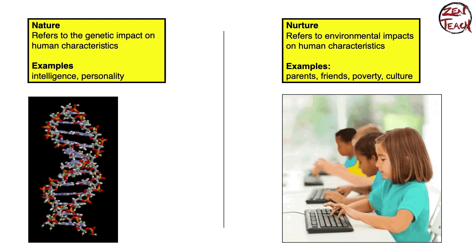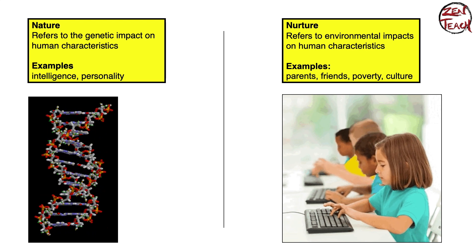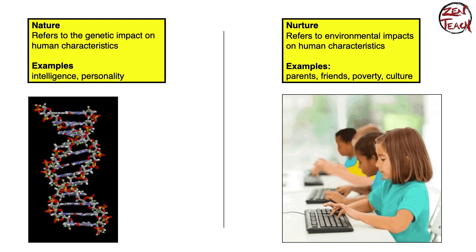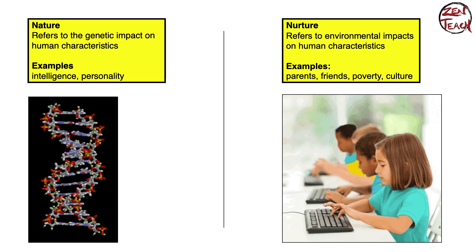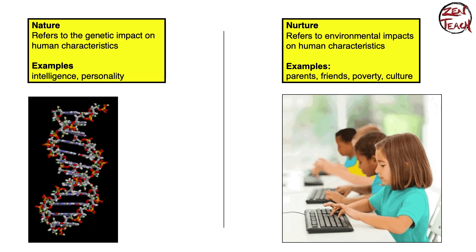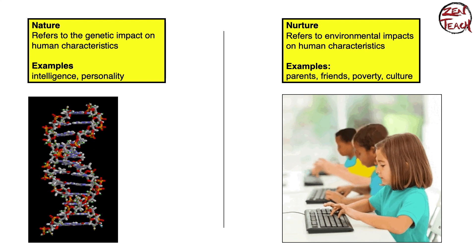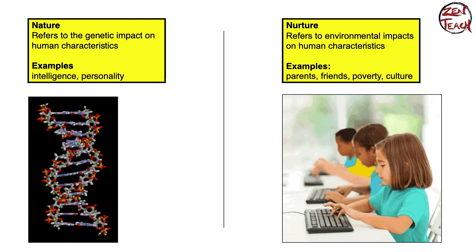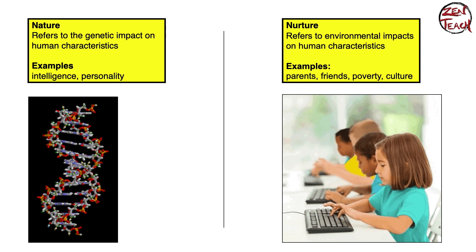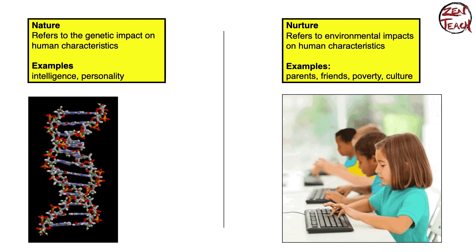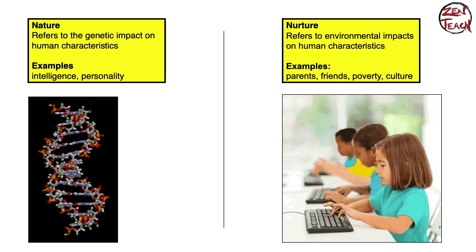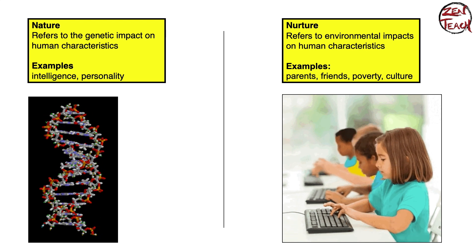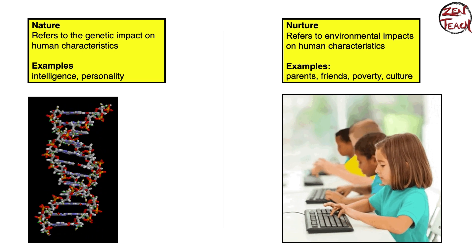Let's define these two words so we have a good foundation. Nature refers to the genetic impact on human characteristics — for example, a certain percentage of your intelligence or personality is due to your genes. In contrast, nurture refers to the environmental impacts on human characteristics — not what you were born with, but how the environment affects you, such as the type of parents you have, your friends, whether you were born into wealth or poverty, and the culture you grow up in.